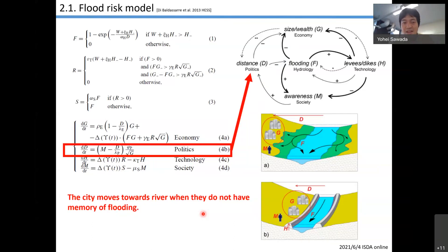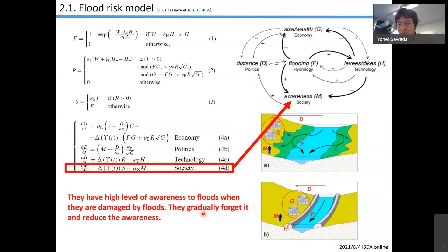Lastly, this equation simplifies the dynamics of our memory of disasters, social collective memory of disasters. This is really simple. They have higher level of awareness to threats when they are damaged by threats. When they hit the threat, they remember the threat. It's quite natural. But they gradually forget it and reduce the awareness when huge threats don't frequently occur.